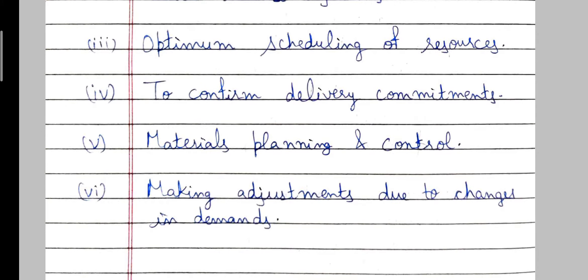The next objective is optimum scheduling of resources. We use production planning and control so that we can do the optimum scheduling of resources. The next objective is to confirm delivery commitments, so that we can deliver products on the decided time and date with no delay in delivery.